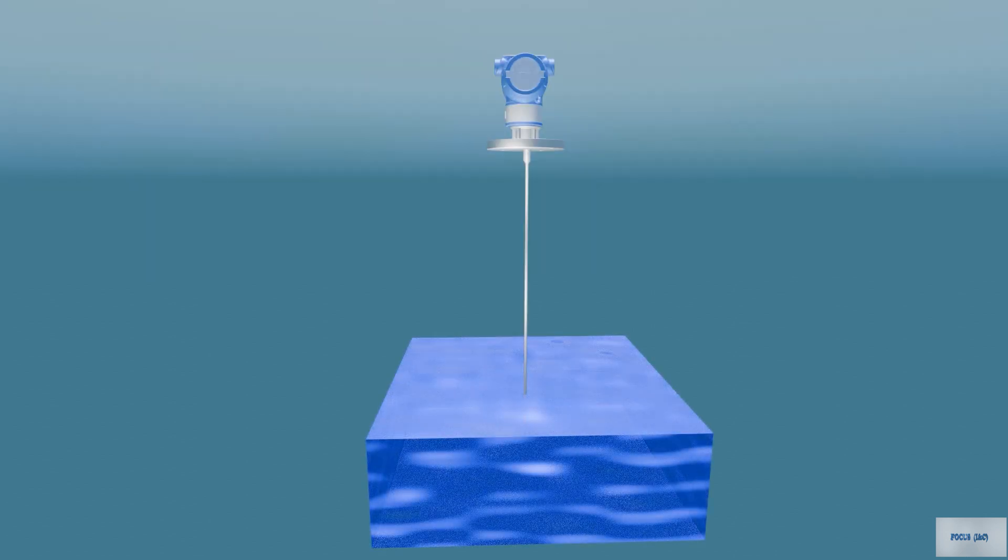Also known as the TDR method, it involves transmitting a pulse to the measurement vessel using a cable or rod.